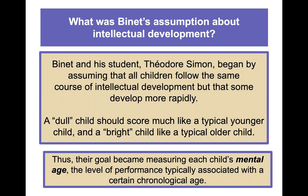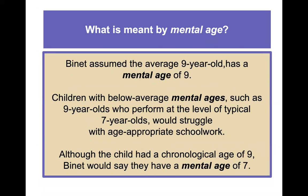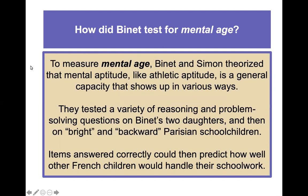Their goal became measuring each child's mental age — the level of performance typically associated with a certain chronological age. Binet assumed the average nine-year-old has a mental age of nine; a nine-year-old performing at the level of a typical seven-year-old would have a mental age of seven. To measure mental age, Binet and Simon tested a variety of reasoning and problem-solving questions on Binet's own two daughters and on bright and so-called 'backward' Parisian school children.